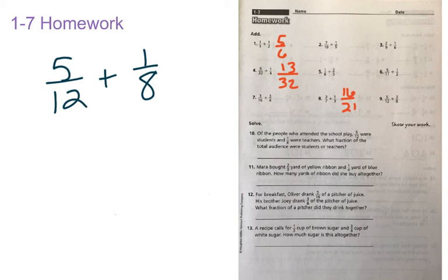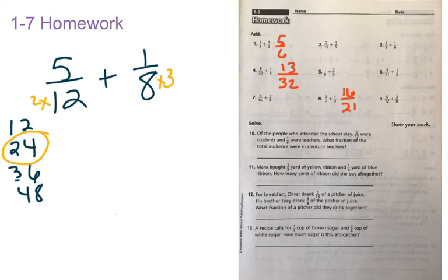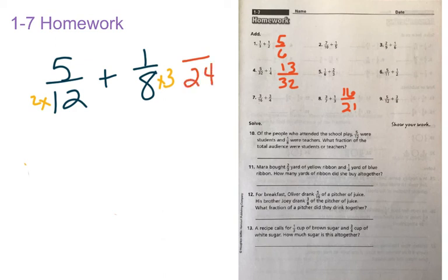And if I went through, and I figured out my multiples of 8, I'd have 8, 16. And so we're going to go ahead and do our multiplication now. And we can see that 8 times 3 is equal to 24. Whatever I do to the denominator, I do to the numerator. So 1 times 3 is equal to 3.